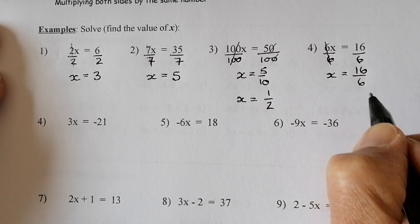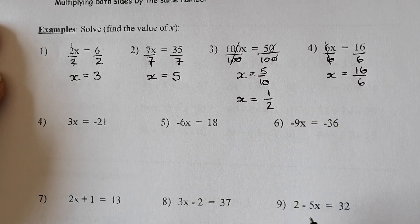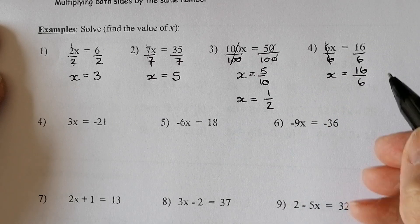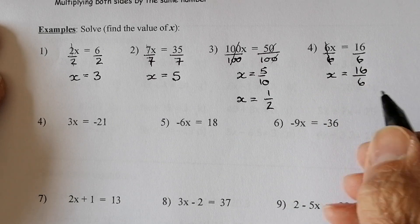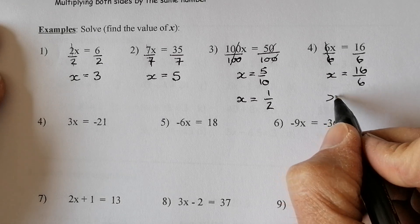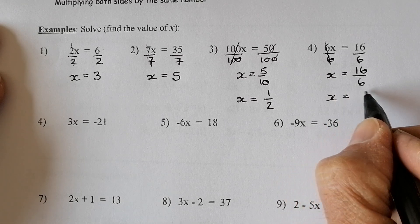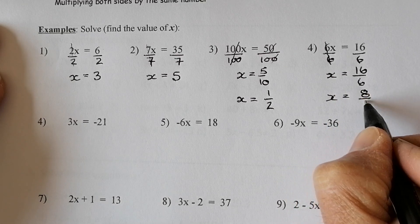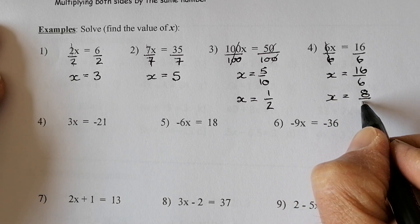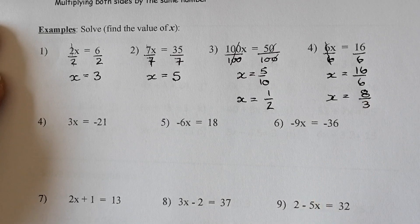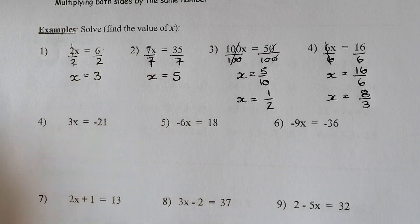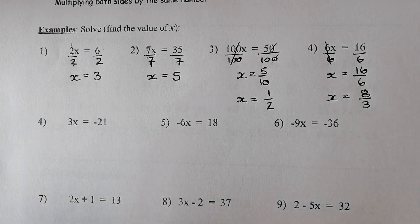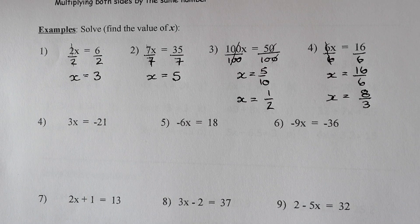So I have 16 over 6, but I know that can be simplified — both are even numbers, so divide both by 2. That leaves me with 8 on the top and 3 on the bottom. I'm going to leave it as a top-heavy fraction and not convert it to a decimal.